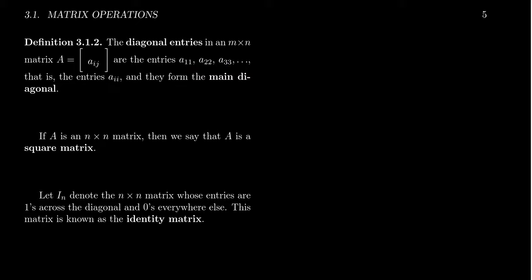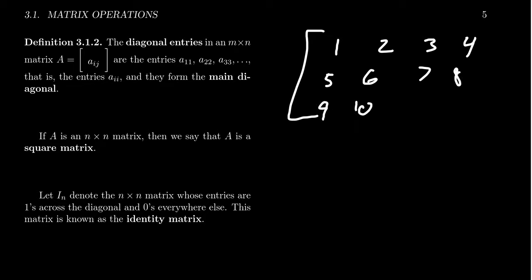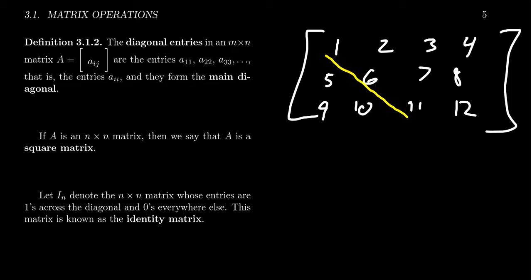As an example, if we have a matrix with entries 1 through 12, the main diagonal consists of the entries at the (1,1), (2,2), and (3,3) positions — that is, 1, 6, and 11. Those are the main diagonal of that matrix.